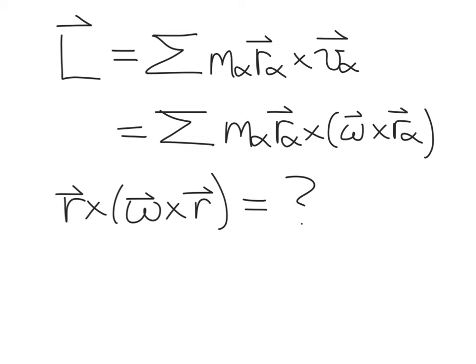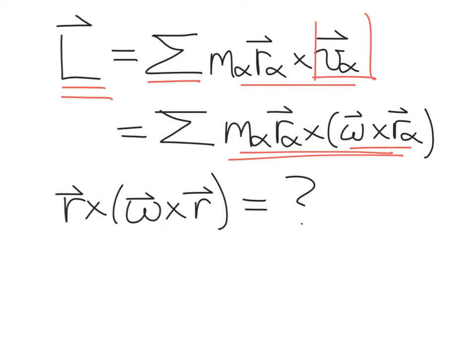For a body made up of a series of finite particles numbered alpha, the angular momentum vector is just the sum over alpha of the angular momentum of each individual particle, which is given by this expression. We've already seen that you can write the velocity vector resulting from rotation as omega crossed into the position vector for that particle. So we need to calculate this and then take a sum over all the particles alpha.